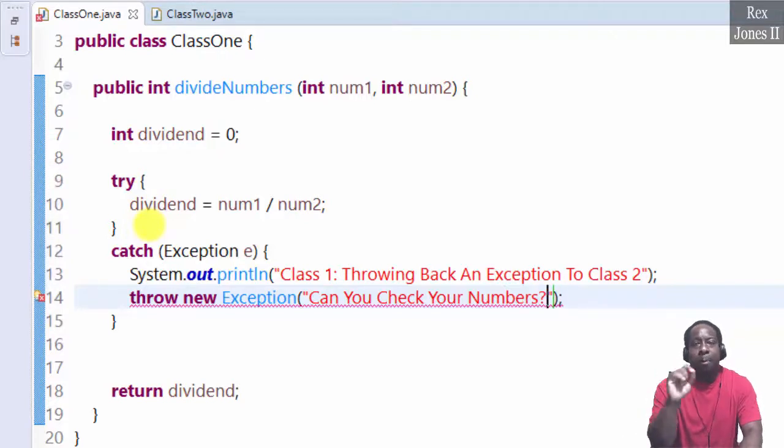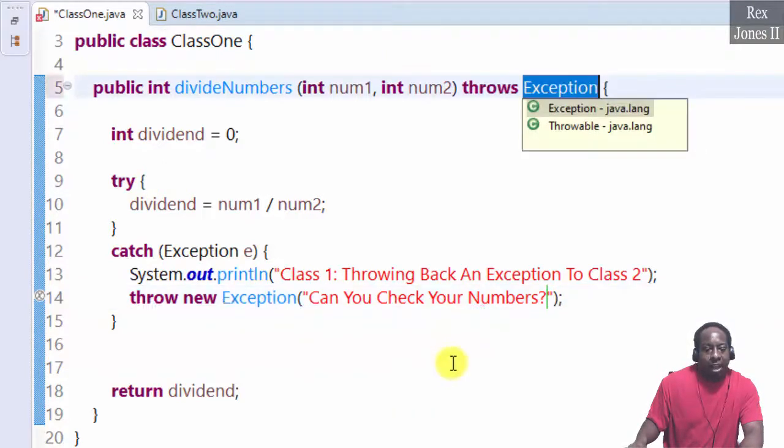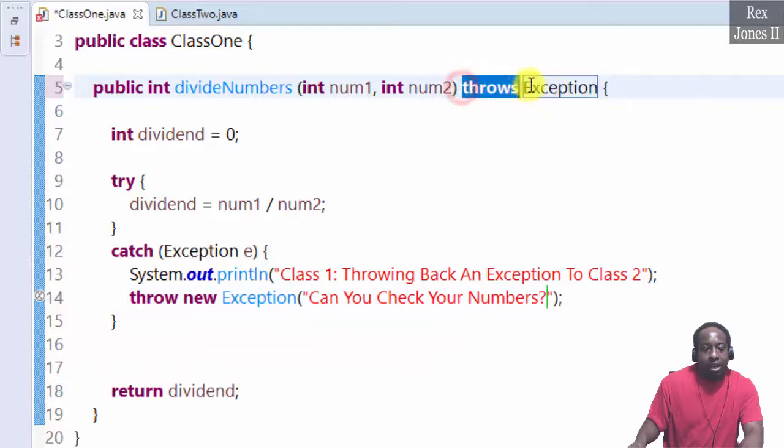Here's where we implement the throws keyword. Notice there's a compiler error. Hover the error and we see add throws declaration, select it, and throws exception is added to our method signature.